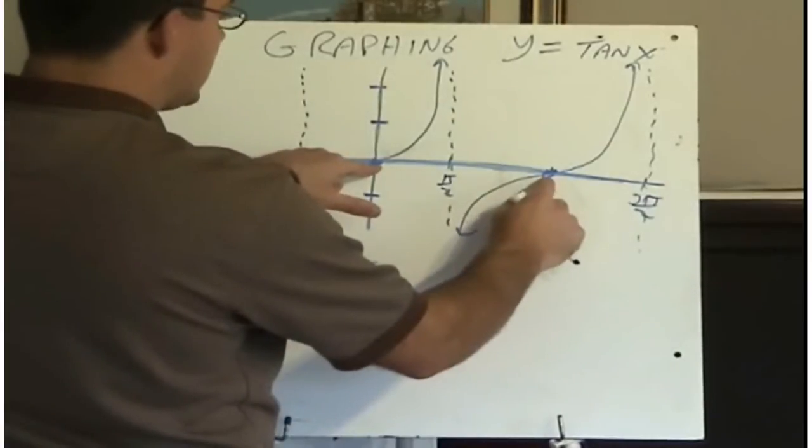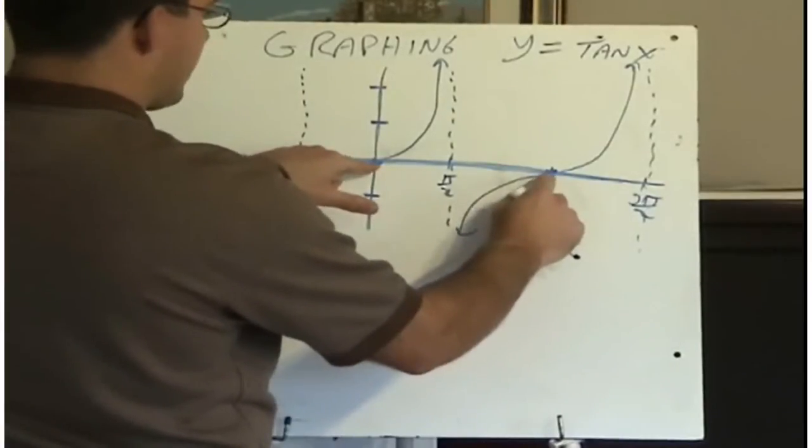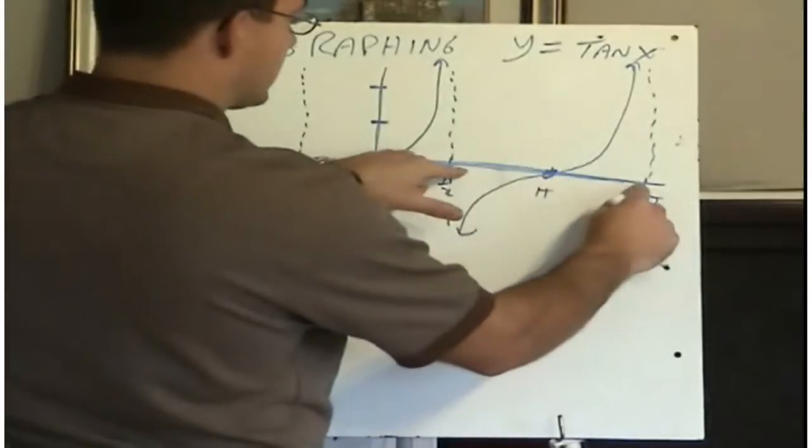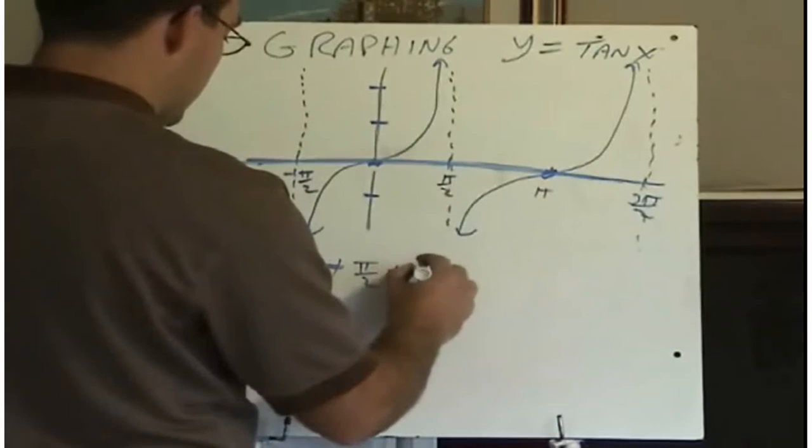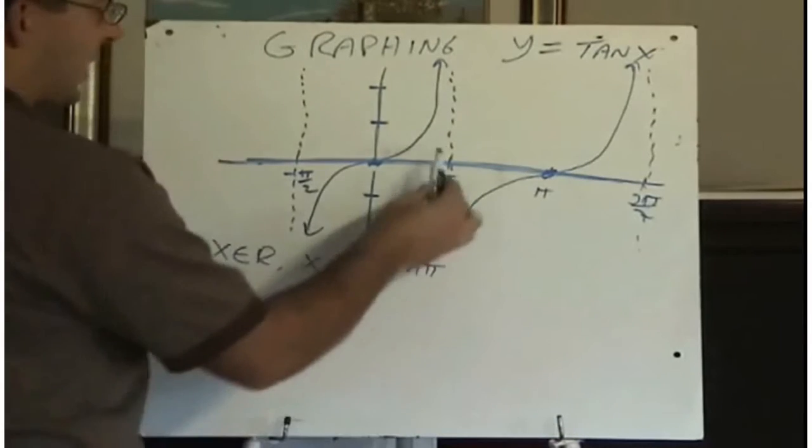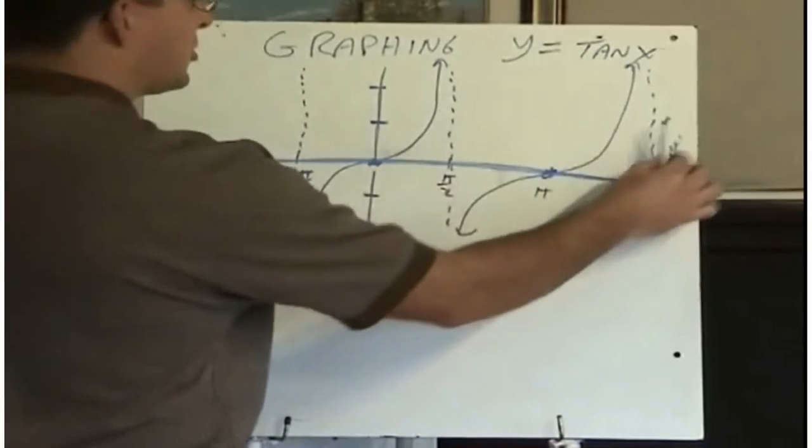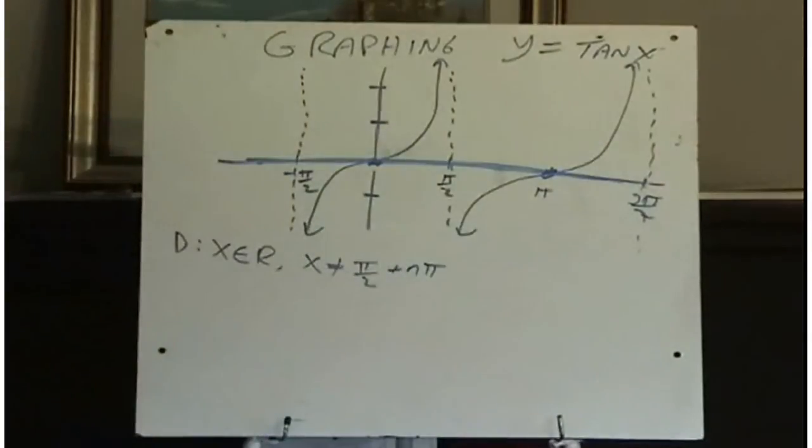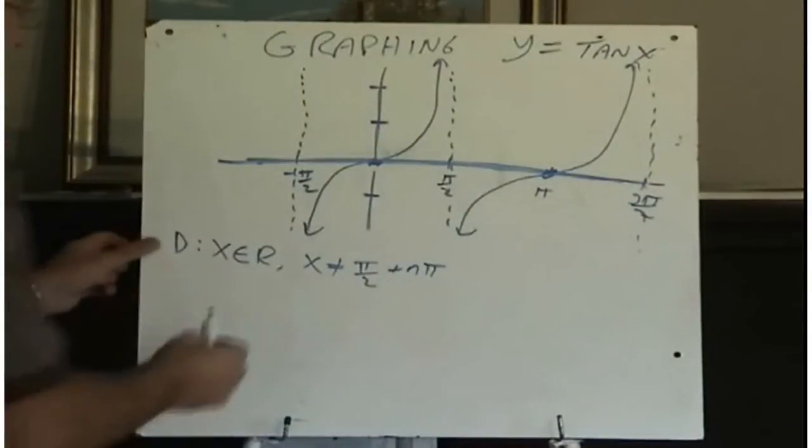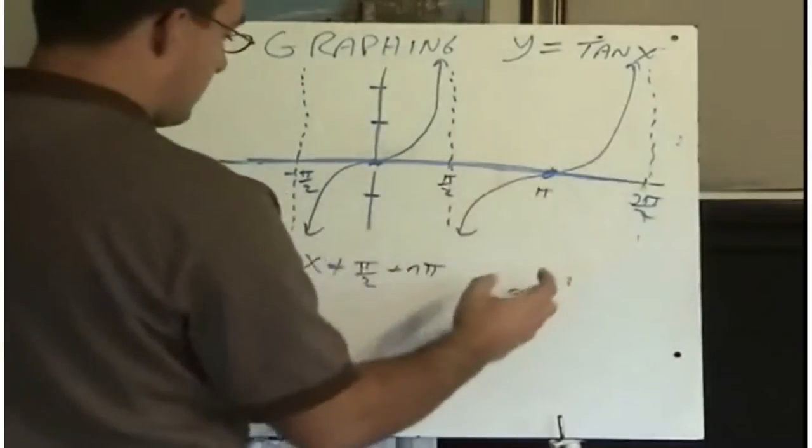You see, the distance between each point of the curve is pi units. So same thing, the distance between the asymptotes must be pi. So pi over 2 plus any multiple of pi takes us to asymptotes where x cannot be. So the domain of tan is all real numbers except pi over 2 plus n pi.